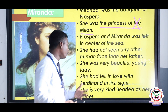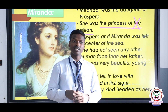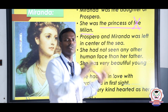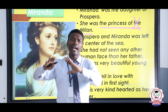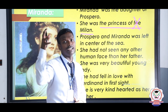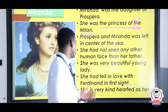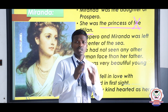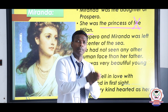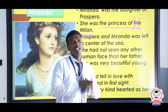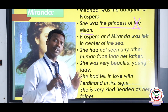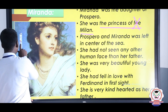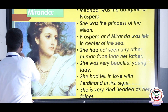Miranda was a very beautiful young lady. She fell in love with Ferdinand at first sight, as she had never seen any other person except her father. The handsome look of Ferdinand attracted Miranda. She was also very kind-hearted like her father — she was the one who begged her father to save all the humans from the tragedy.